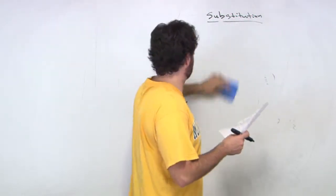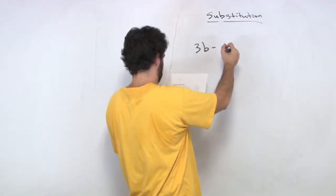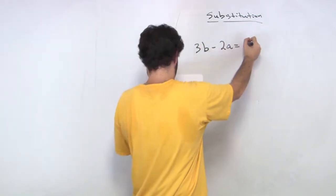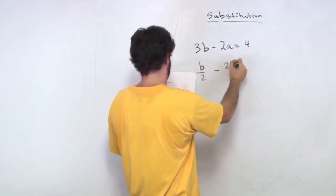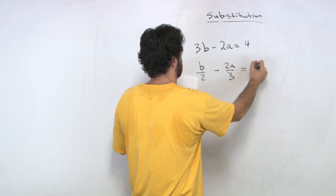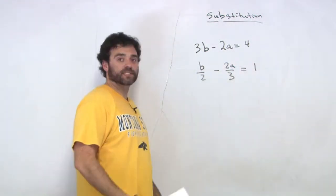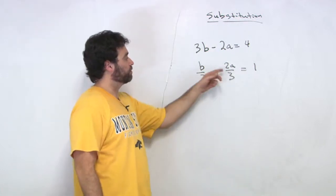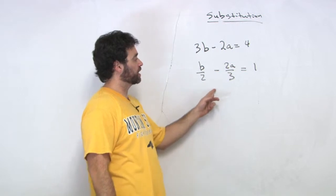And let's try a little tricky one down here. Get a little more tricky. We get 3b minus 2a equals 4, and I get b over 2 minus 2a over 3 equals 1. We want to solve for a and b. Again, isolate one of our variables.